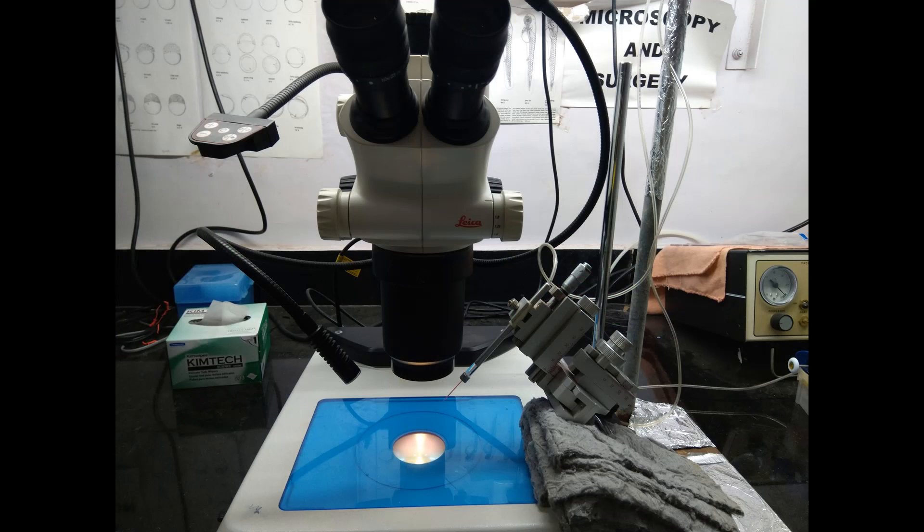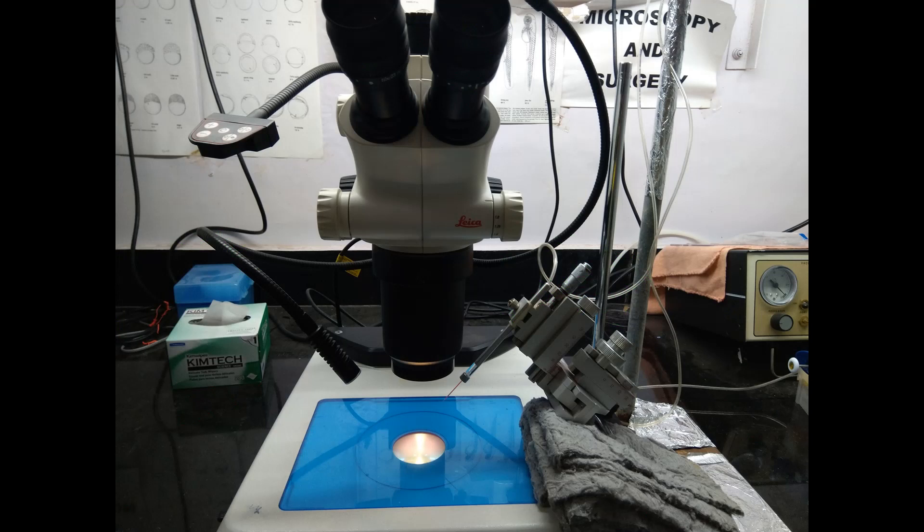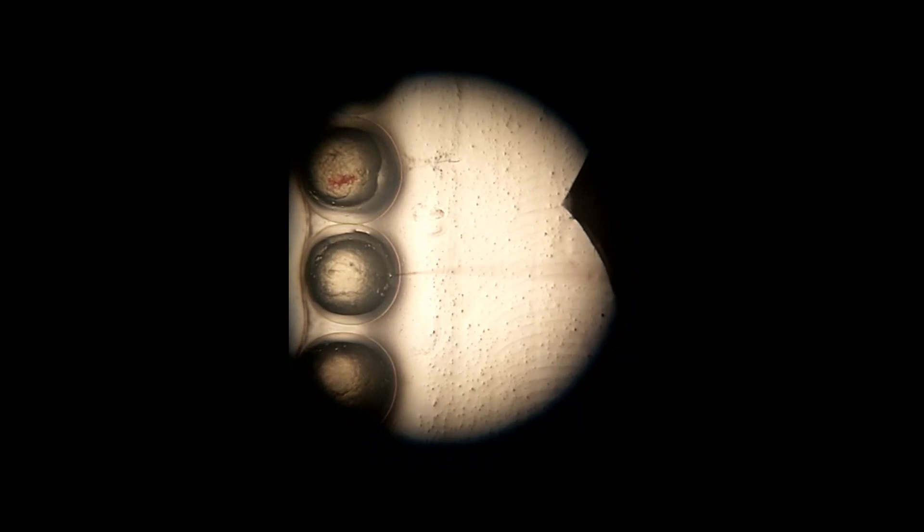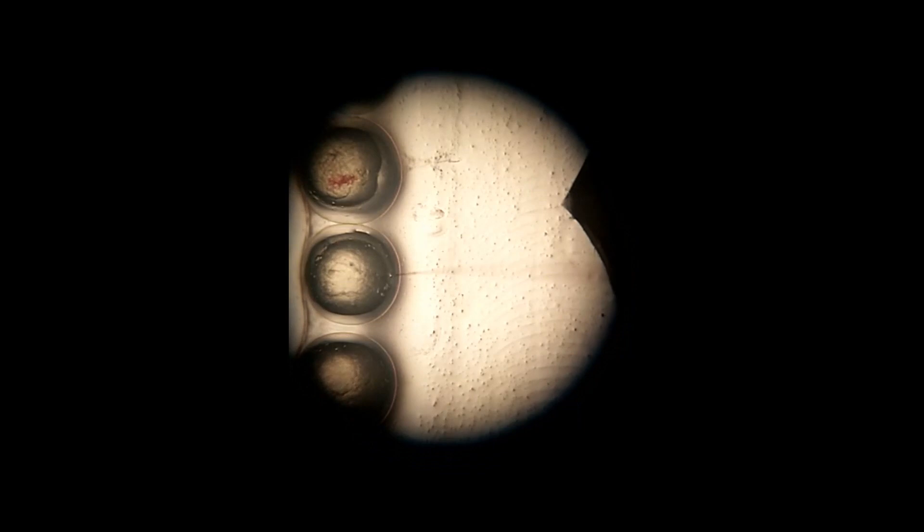This is the injector setup, and this fine needle is used to do injections. First, we break the needle and determine volume by measuring the size or diameter of the drop, and then we inject into the one-cell stage embryo in the yolk.